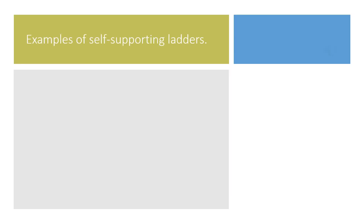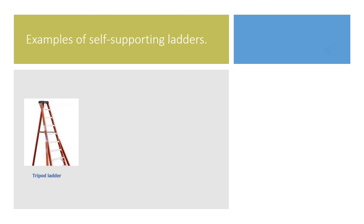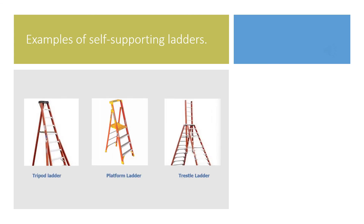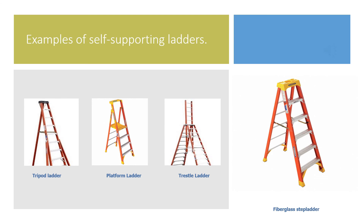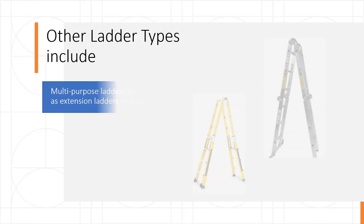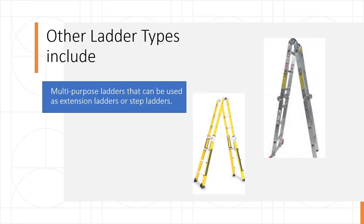Some examples of self-supporting ladders include tripod ladders, platform ladders, trestle ladders, and fiberglass step ladders. Other ladder types include multi-purpose ladders that can be used as extension ladders or step ladders.